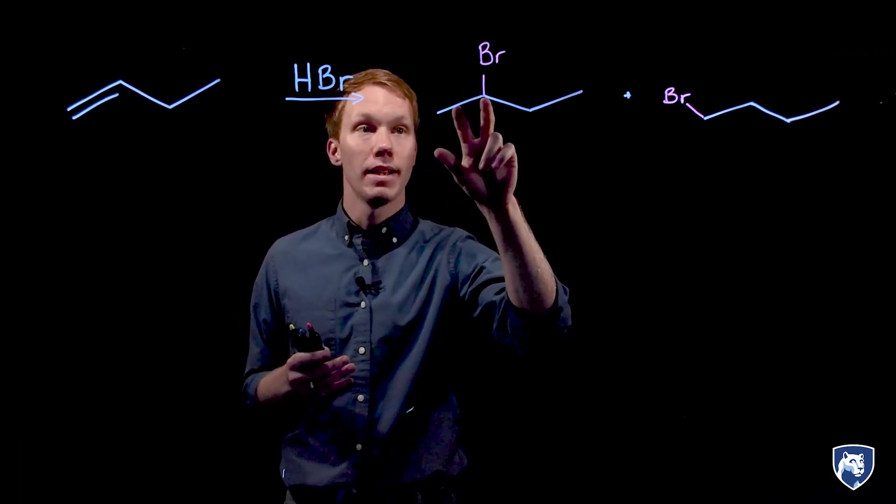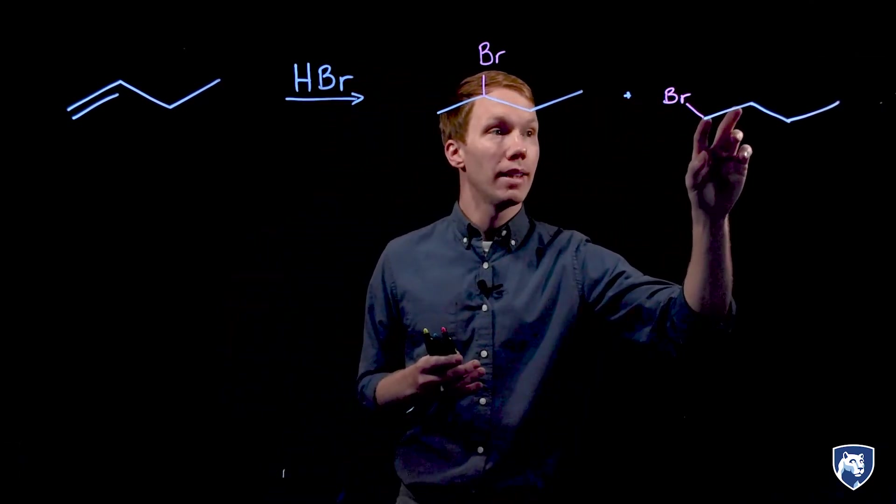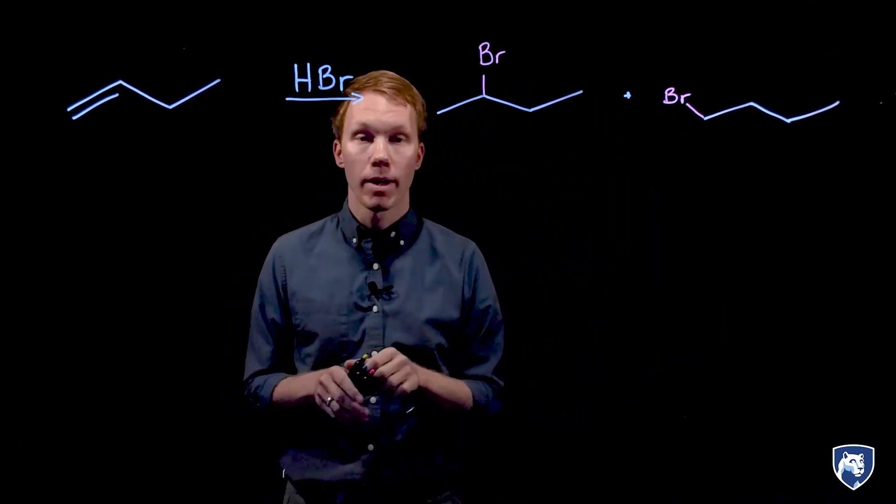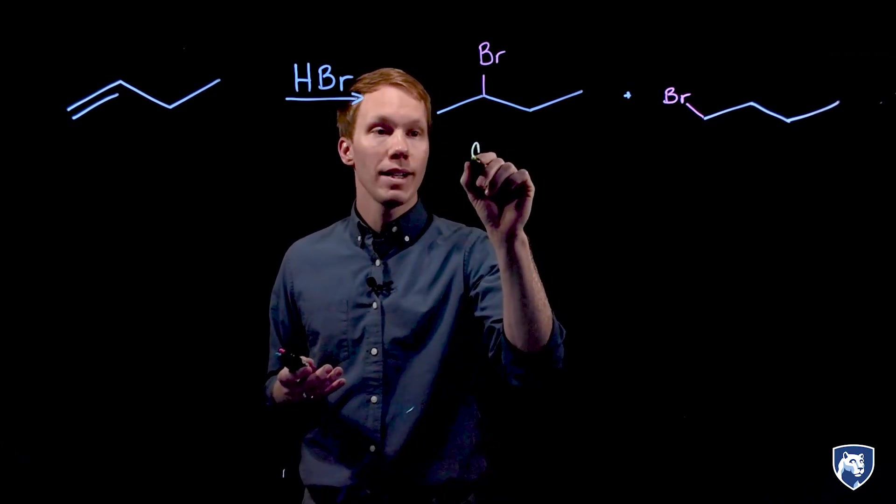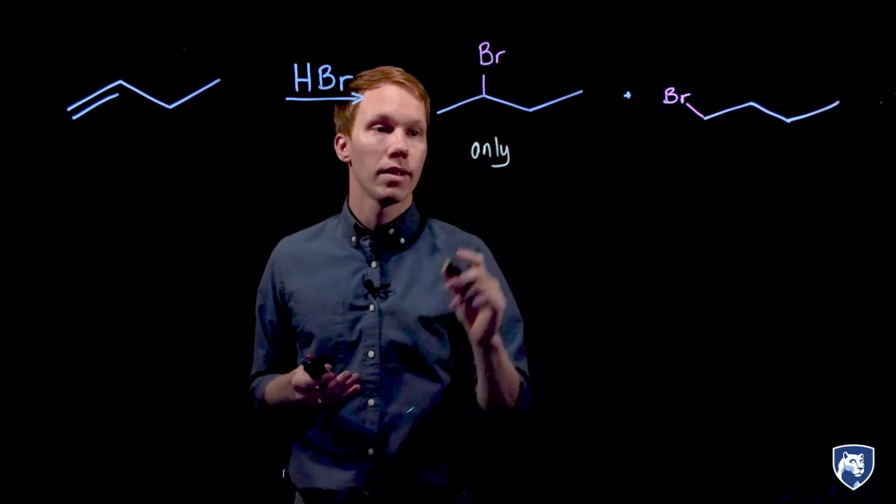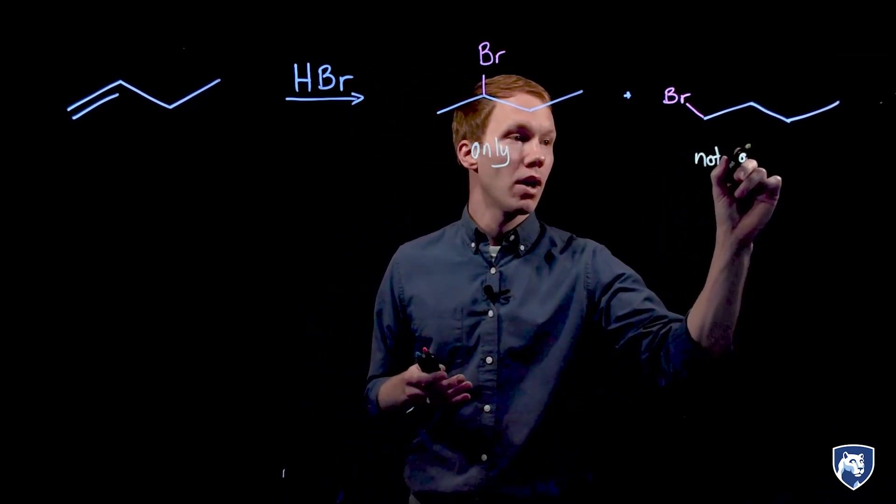This reaction adds a hydrogen and a halogen to the two carbons of the alkene. We can add them where the bromine is on the secondary position, or where the bromine is on the primary position. When we analyze our product mixture in the lab, we find that the secondary alkyl halide is our only product. Our primary alkyl halide is not observed.